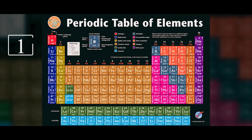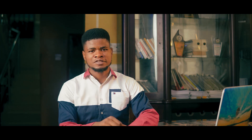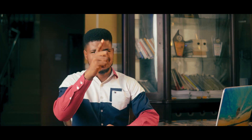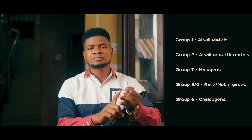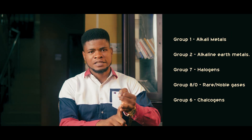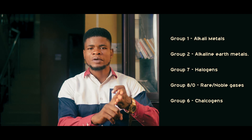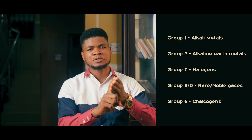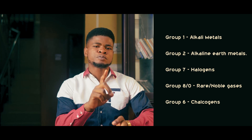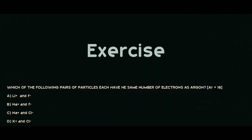The first topic is the periodic table. This topic forms the foundational aspect of secondary school chemistry, so it is very important. Here you should know the first 20 elements and their symbols. You should know the trend across a period and across the groups. You should know the names the groups are called: Group 1 are called alkali metals, Group 2 are called alkaline earth metals, Group 7 are called halogens, Group 8 or Group 0 are called noble gases, and Group 6 are called chalcogens. Attempt the question on your screen and leave the answer in the comment section.